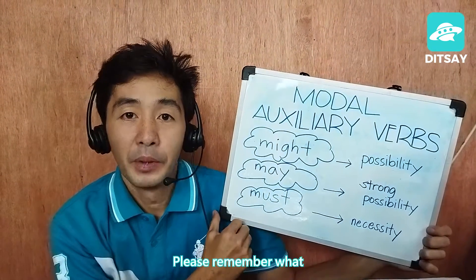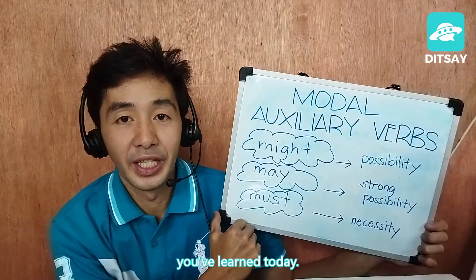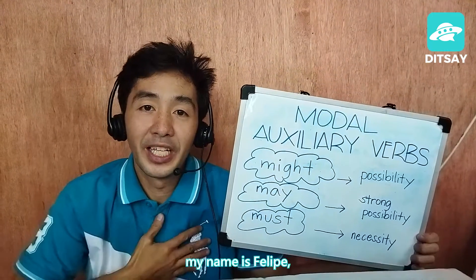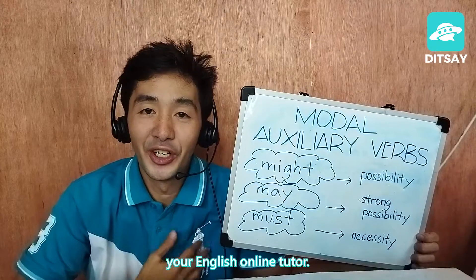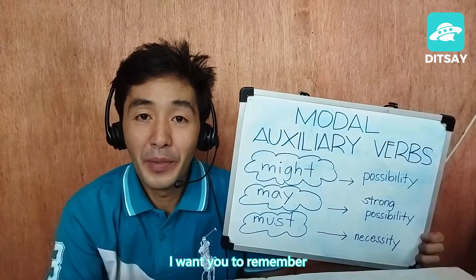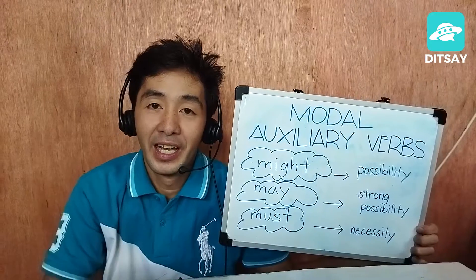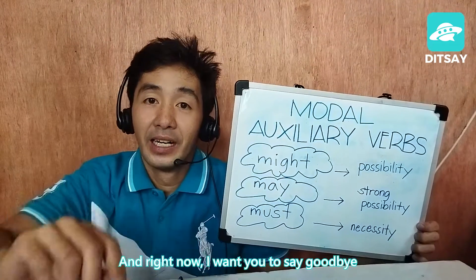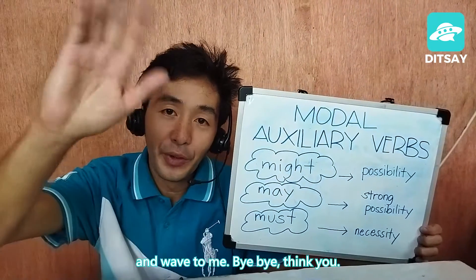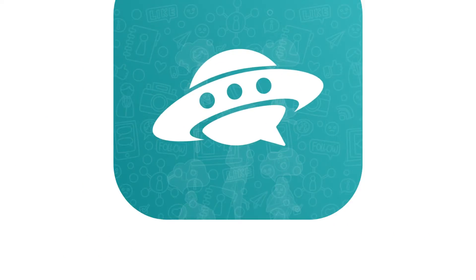Here are the modal auxiliary verbs — might, may, and must. Please remember what you've learned today. Once again, my name is Felipe, your English online tutor. Remember what we have talked about today, and right now I want you to say goodbye and wave to me. Bye bye, thank you!